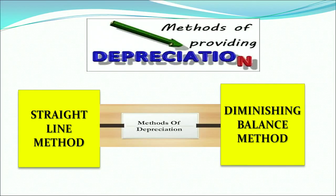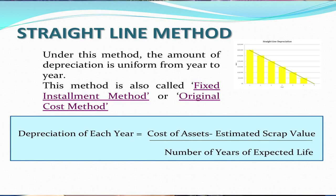As we learnt in the earlier part, depreciation is an expense which is to be charged to your profits every year till the useful life of the asset. The relevance and objectives we had also learnt there. Now there are two methods of providing depreciation: the straight line method and the diminishing balance method. Let us now understand the first method, which is the straight line method.